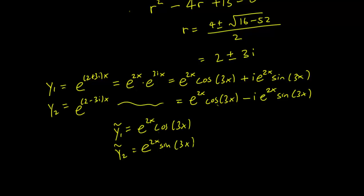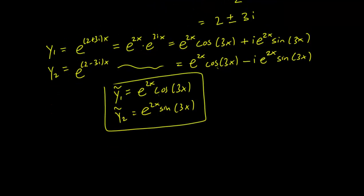So as we discussed in class, if a plus ib is a solution to the differential equation, then both a and b are also solutions of the differential equation. So these are our two linearly independent solutions.